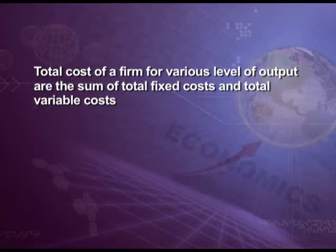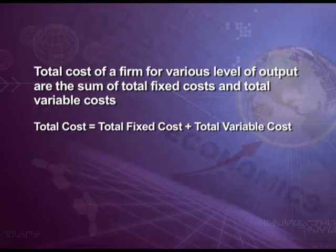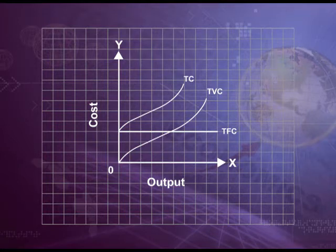Now comes total cost. Total cost of a firm for various levels of output is the sum of total fixed cost and total variable cost. Symbolically, total cost equals total fixed cost plus total variable cost. The total cost curve is obtained by adding vertically the total fixed cost curve and the total variable cost curve. The total cost curve starts at the point from where the total fixed cost curve starts, because at zero level of output, total cost equals total fixed cost.